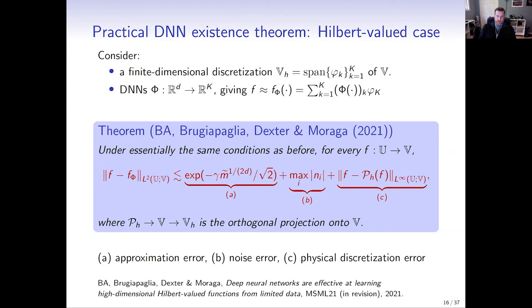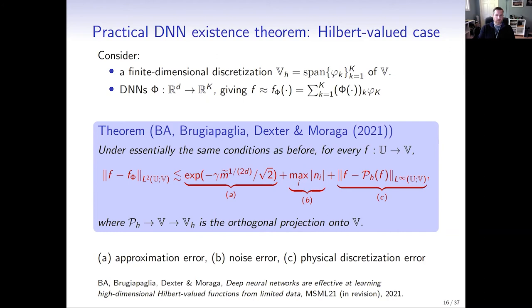You can also extend this to the Hilbert-valued case: you discretize your Hilbert space — think of this as a finite element discretization — and train DNNs as mappings from your input space to the coefficient space. You get essentially the same error bounds: an approximation error term, a noise error term, and an additional physical discretization error proportional to the best approximation error in that space. To conclude this first part: there provably exist good ways of training deep neural networks, achieving exponential rates of convergence with mild sample complexity, and getting the same rates provable for best-in-class schemes based on compressed sensing with polynomial approximation.